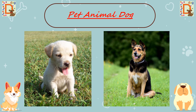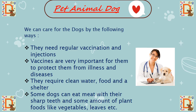Children, dogs must be taken care of and looked after at all times. We can care for dogs in the following ways: they need regular vaccination and injections. Just like you go to the doctor for injections to stay healthy, dogs also need to go to a vet for regular vaccination. Vaccines protect them from illness and diseases. They also require clean water, food, and a shelter to live. Some dogs can eat meat with their sharp teeth, and some amount of plant foods like vegetables and leaves.